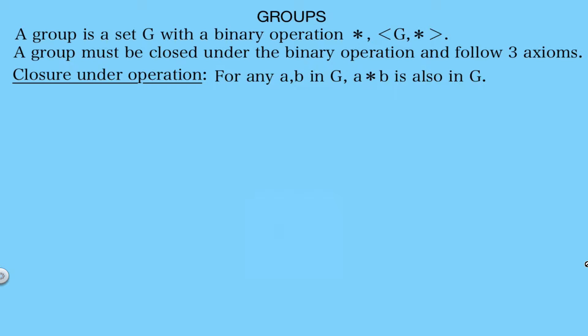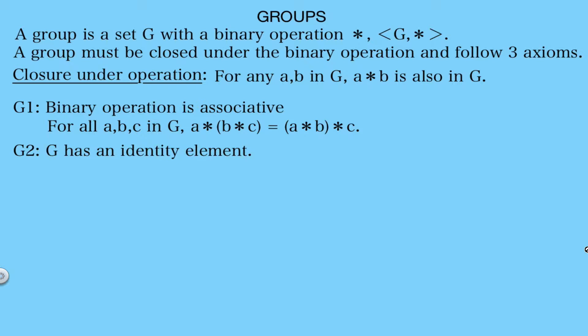Now in order to be a group, the structure has to follow three axioms. The first axiom, which we'll refer to as G1, is that the binary operation is associative. So for all elements A, B, and C in G, we need A star (B star C) to equal (A star B) star C.